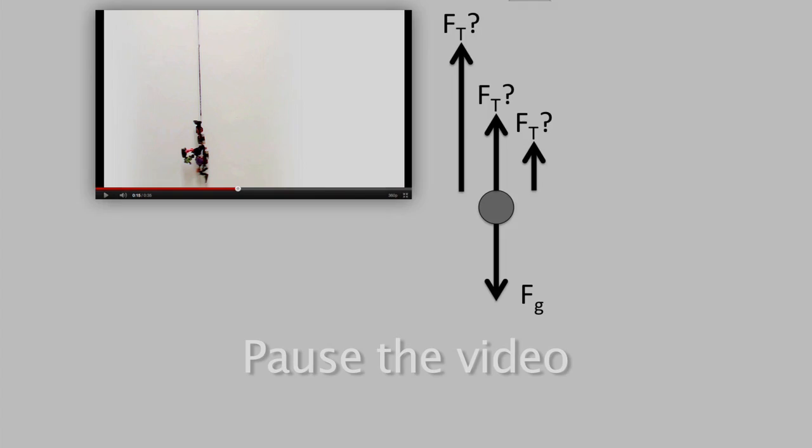Again, we start with a dot. We don't draw a stick figure, just a single point. And we don't include the rope, even though it is important. We just draw the object in question, the jumper. Gravity is clearly an important force, as is the tension from the bungee cord. To determine the strength of the tension, we must decide what the acceleration of the jumper is. Pause the video to consider this.